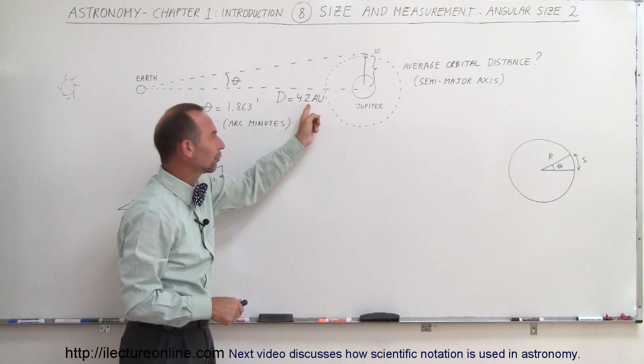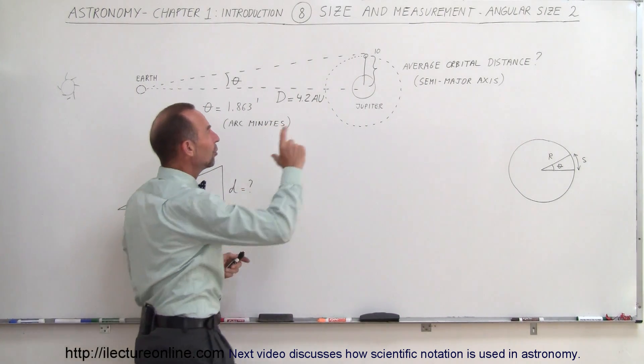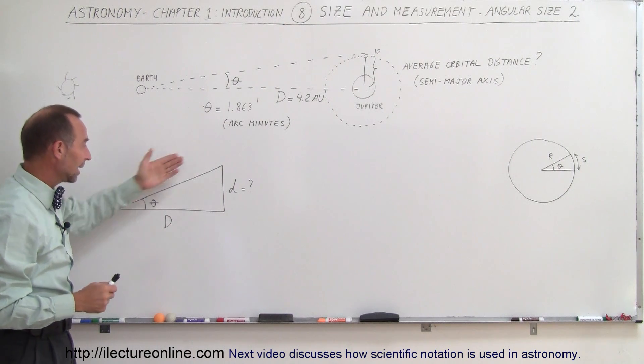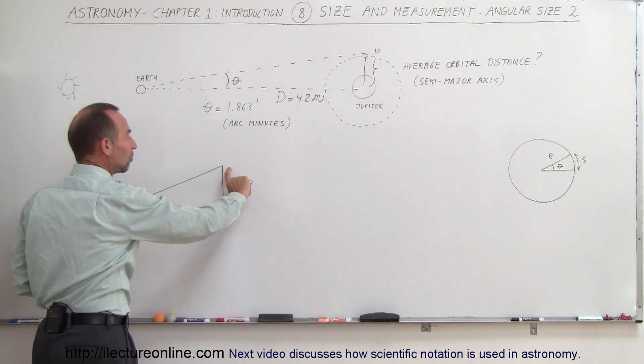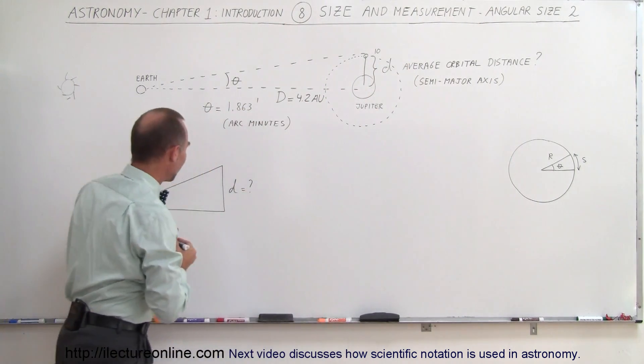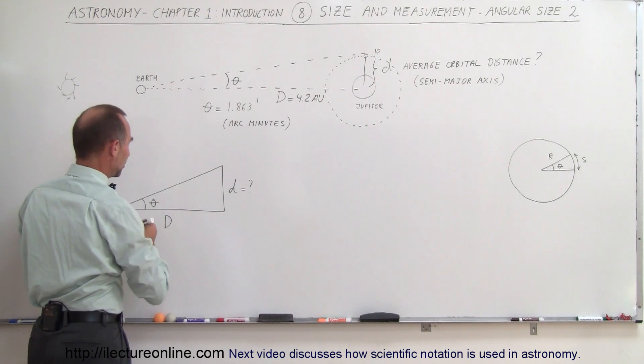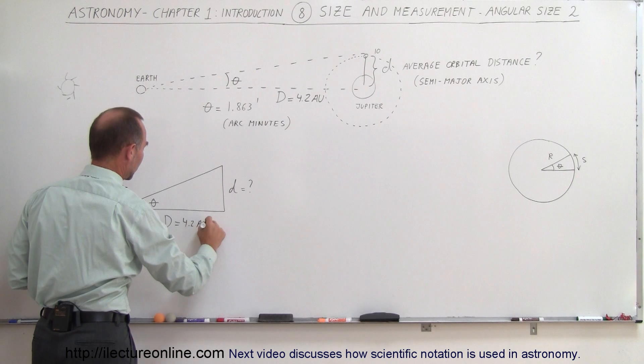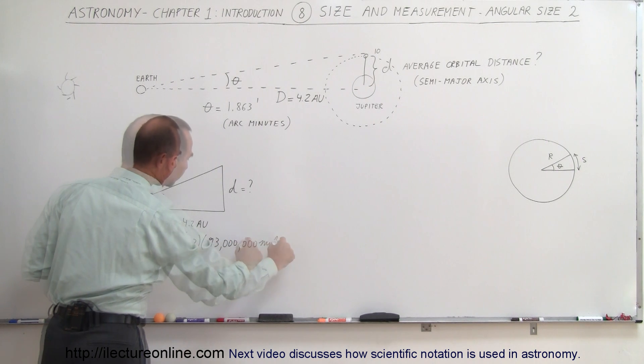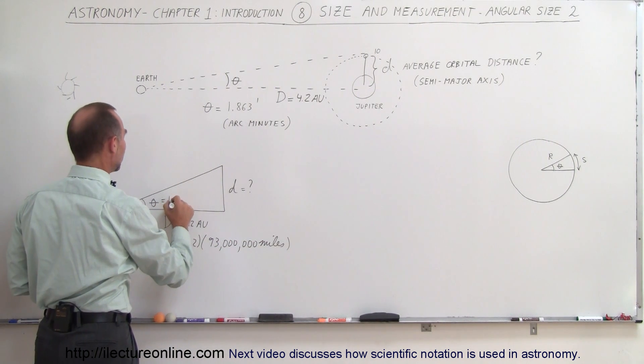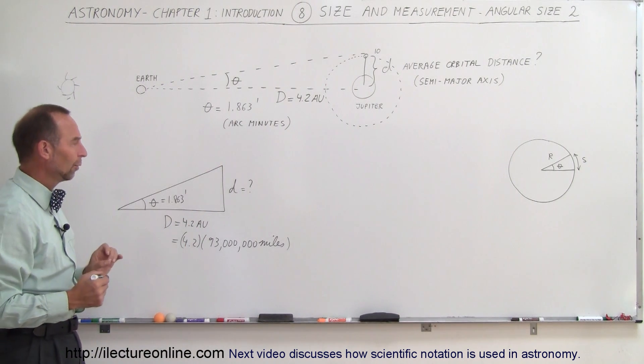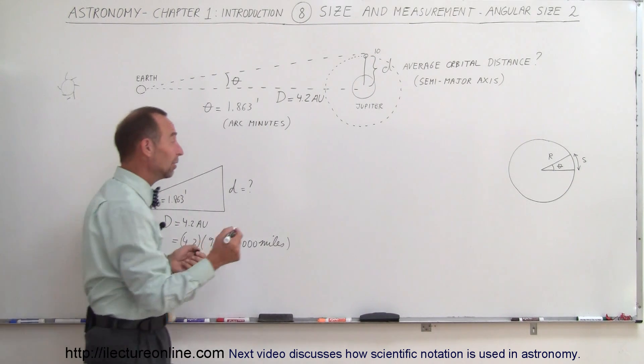Knowing the distance to Jupiter, and of course each astronomical unit is 93 million miles, we should be able to figure out the distance between Jupiter and Io, the average orbital distance. And so for that, what we're going to do is we're going to take an example here of a triangle. We're trying to measure the small distance d here, so I'll call this the small distance d. The large distance D is the distance away from the Earth. So big D is 4.2 astronomical units, 4.2 times 93 million miles. And the angle we measured to be 1.863 arc minutes. And so the question is, how far away is Io from Jupiter?